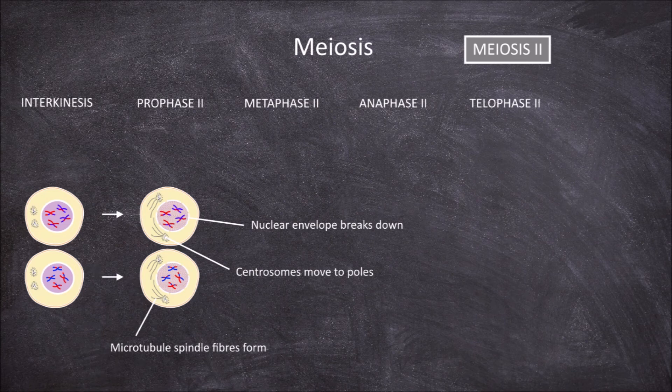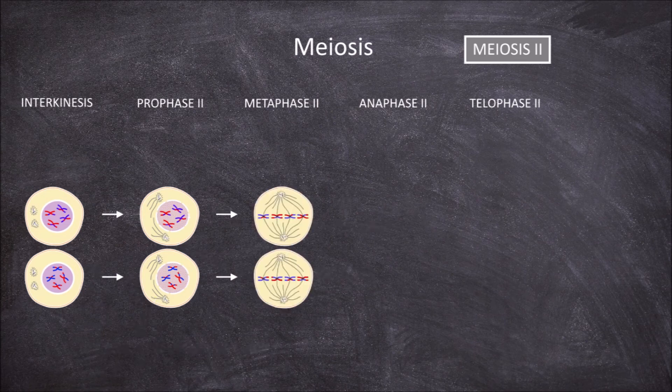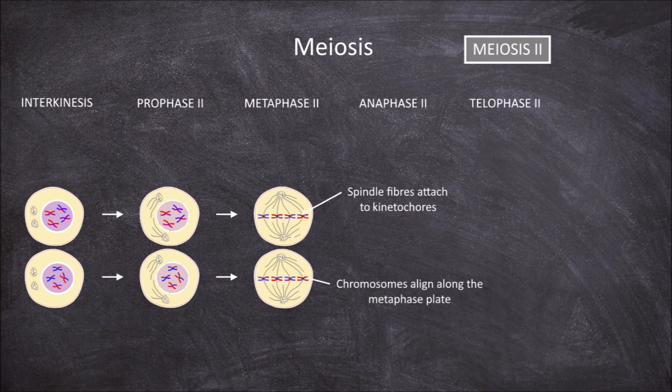The second phase of meiosis 2 is metaphase 2. During metaphase 2, microtubule spindle fibers find and attach to the kinetochores of the chromosomes in each daughter cell. The spindle fibers from opposite poles attach to each sister chromatid of a single chromosome, causing single chromosomes to align along the middle of the cell along what is called the metaphase or equatorial plate.